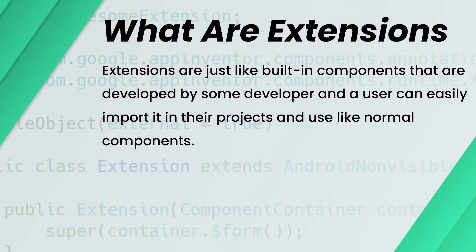When App Inventor was initially released there was nothing such as extensions — we only had the built-in components and we could use them in our projects. But now we can use extensions, and there are literally tons and tons of extensions that we can use in our projects. Most users do use a lot of extensions to add functionality which is not built-in into the platform.